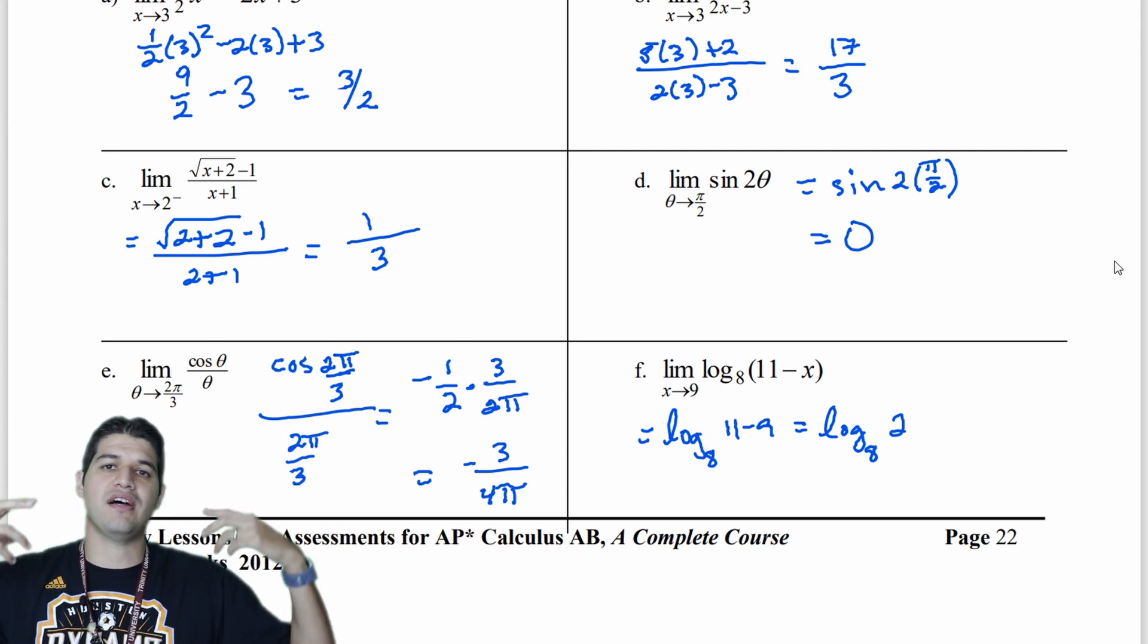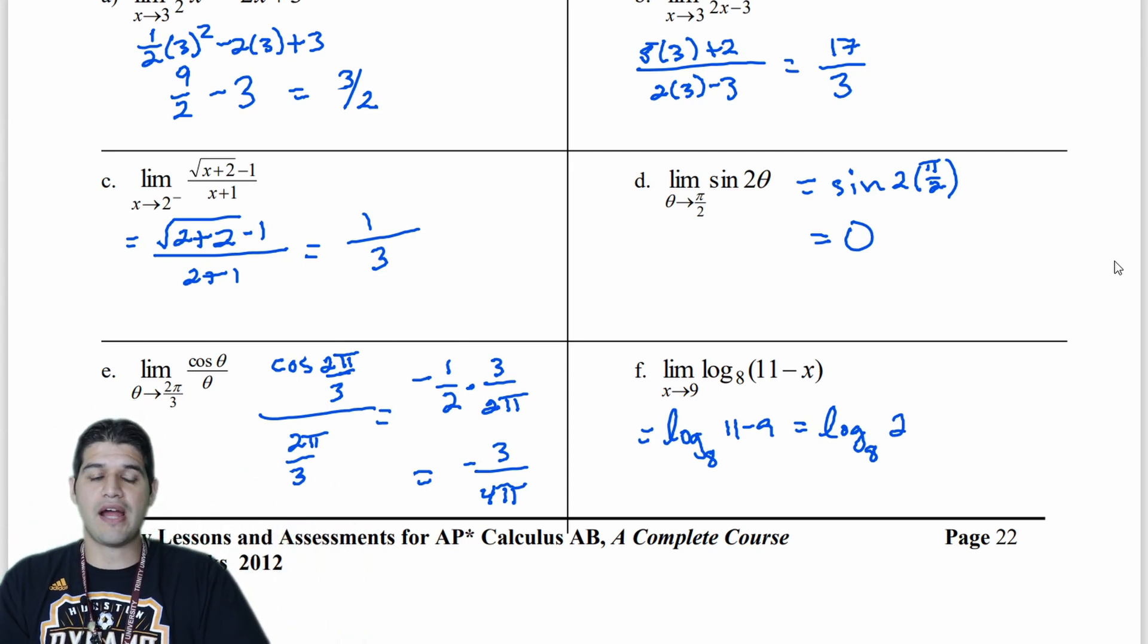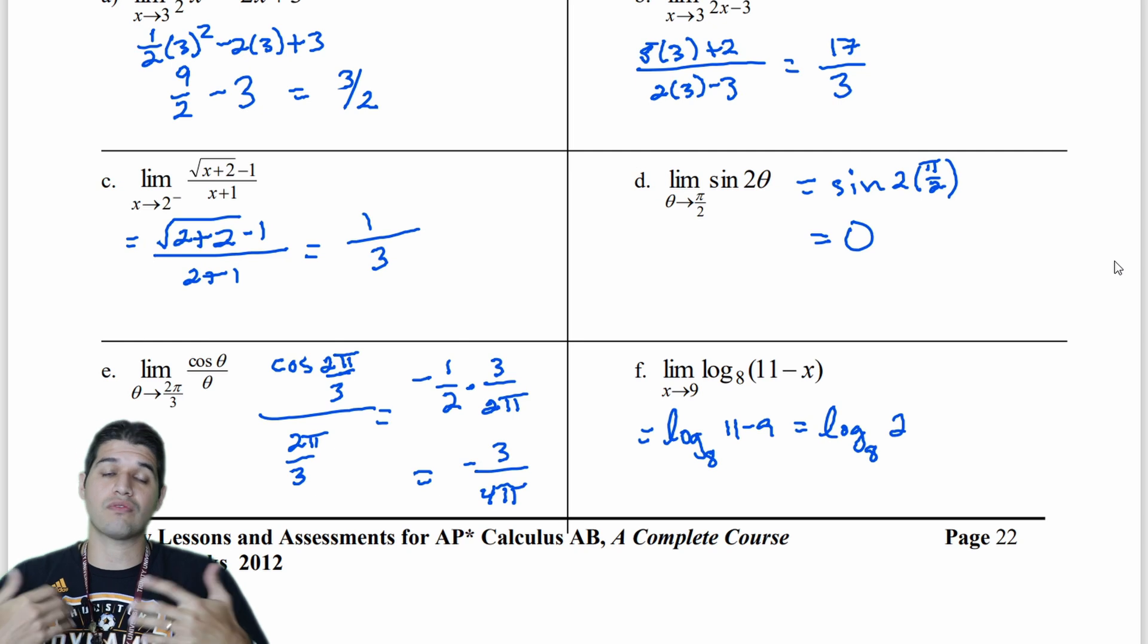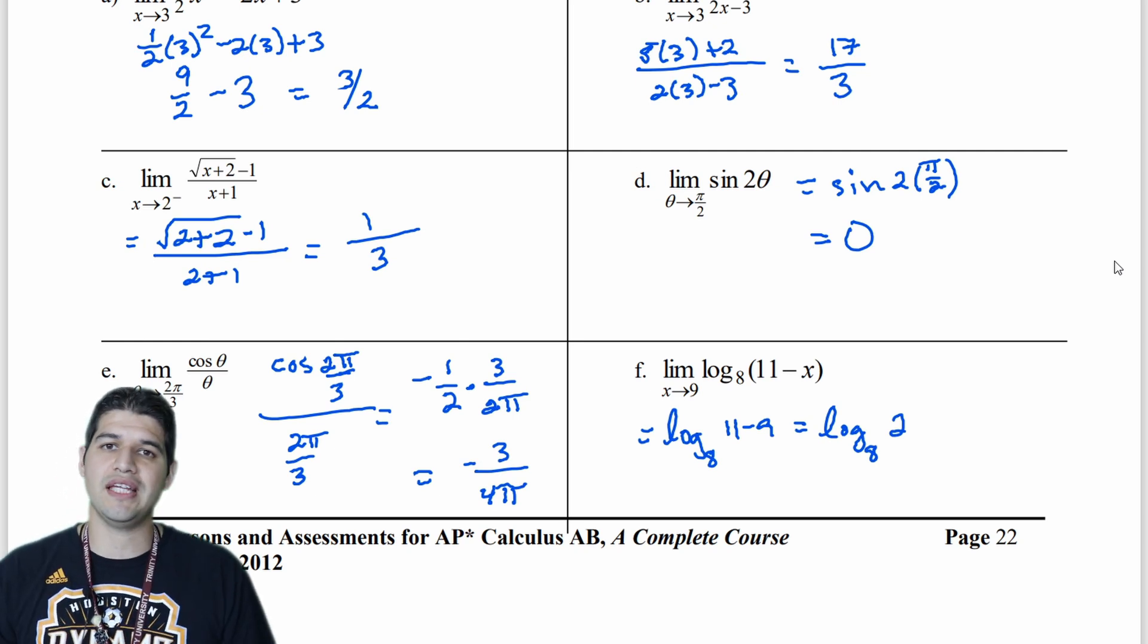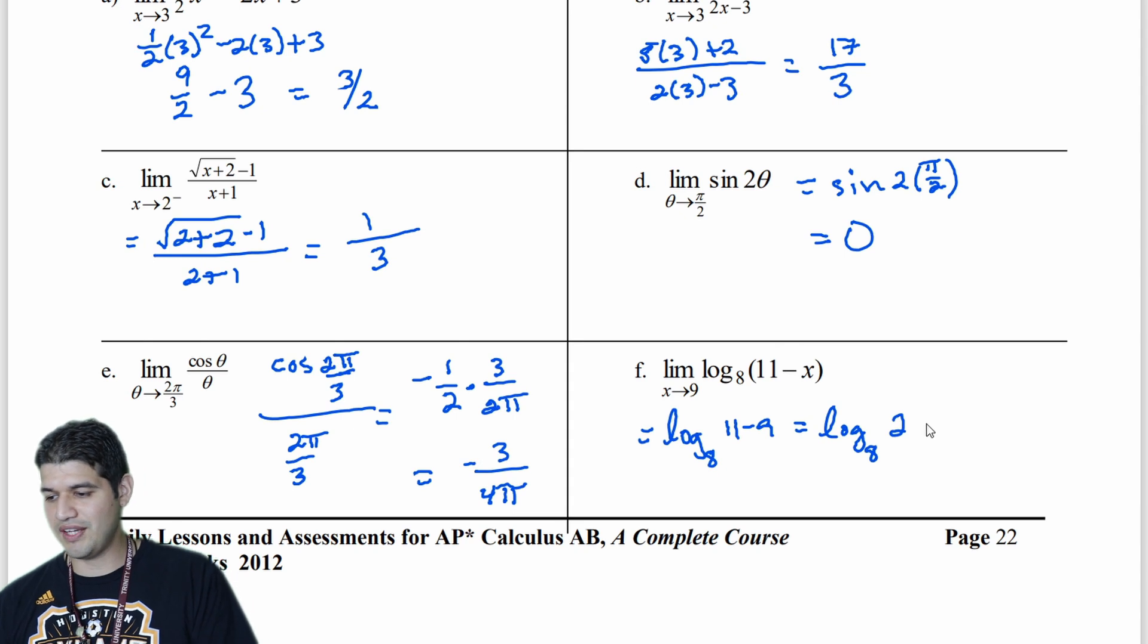So fractions for our powers or radicals. So 8 to the 1 third, or the cube root of 8 is getting me 2. So this evaluates to 1 third.